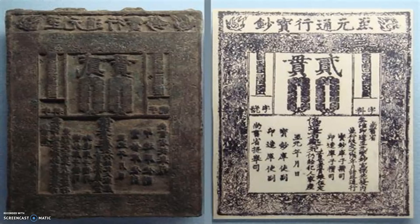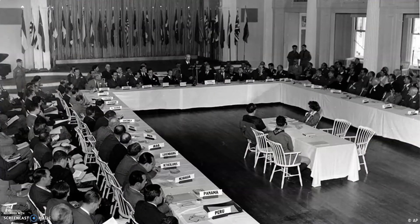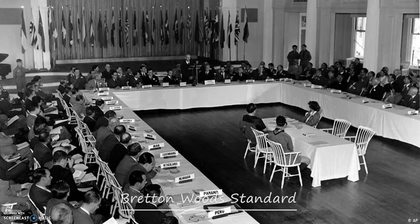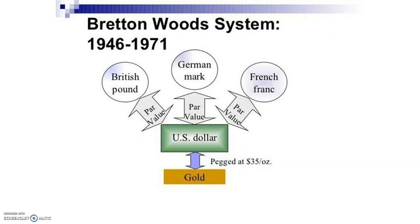Later on, in the year 1944, at the conference of all the world's allied nations, the Bretton Woods standard was formed. The Bretton Woods standard replaced the gold standard at that time, and the US dollar served as the global currency, establishing America as the global power in the world economy. This happened because after World War Two, the US was in possession of three-fourths of the world's gold supply. Since gold was regarded as the first true money with innate value, the US was recognized as the world power, and the value of every other currency was pegged to the US dollar, whose value was in turn pegged to gold.